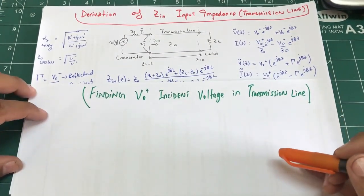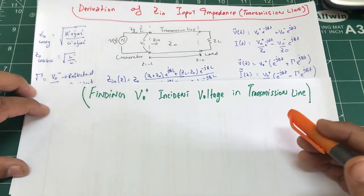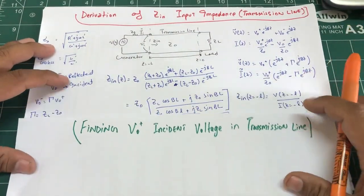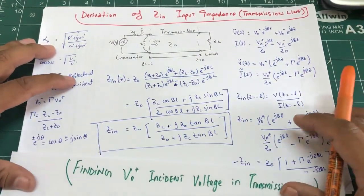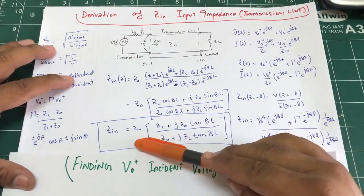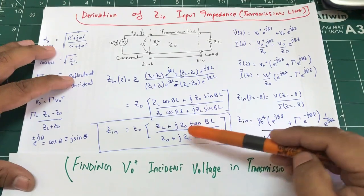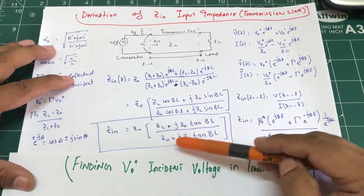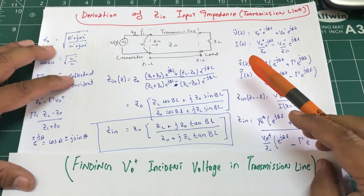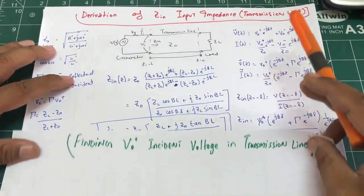Welcome back. In our last video we derived Zin, the input impedance of a transmission line, which looks something like this: Z₀ multiplied by the whole thing ZL plus j·Z₀·tan(βl) divided by Z₀ plus j·ZL·tan(βl). This was the input impedance we derived.